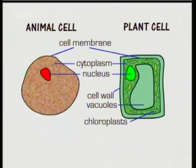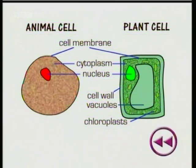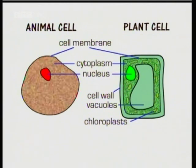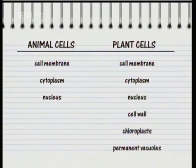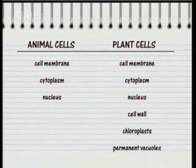If you need more time to complete your table, stop the tape and look back over this section. Animal and plant cells all have a cell membrane, cytoplasm, and a nucleus. Plant cells also have cell walls, chloroplasts, and permanent vacuoles.